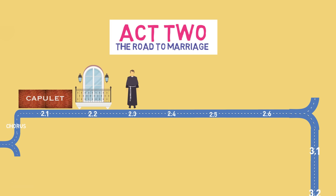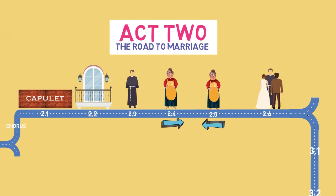Juliet then sends her messenger, the nurse, to check that Romeo is still serious. He is, and he asks the nurse to tell Juliet to come to Friar Lawrence's cell that afternoon to be married. The nurse returns to tell Juliet the news, but she pretends to be out of breath and unable to tell her. She eventually gives her the good news and Juliet is told to go to Friar Lawrence's cell. In the final scene of Act 2, Romeo and Juliet meet for the third time just before Friar Lawrence performs the marriage ceremony. He hopes this love will bring peace between the feuding Capulets and Montagues.